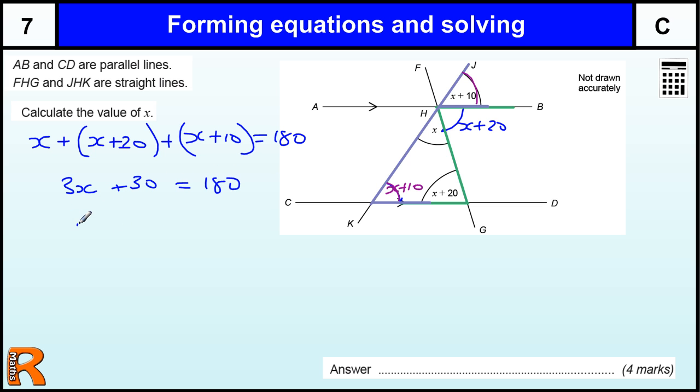And then one for solving it to get 3x equals 150 if we take away the 30 from both sides. Divide by 3 we get 50 on both sides.